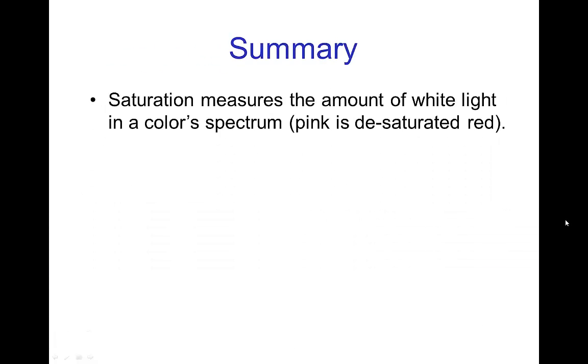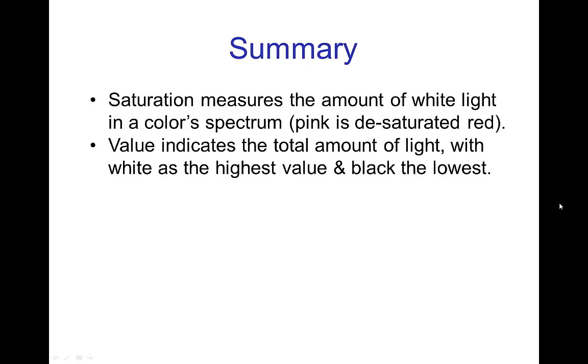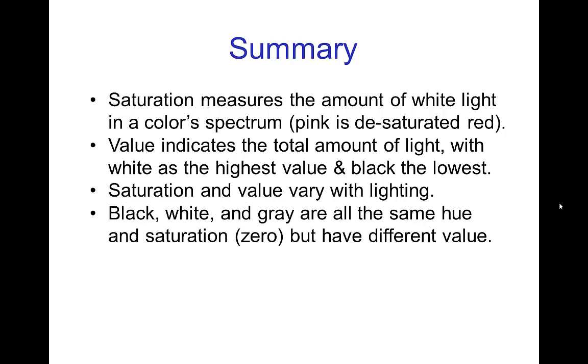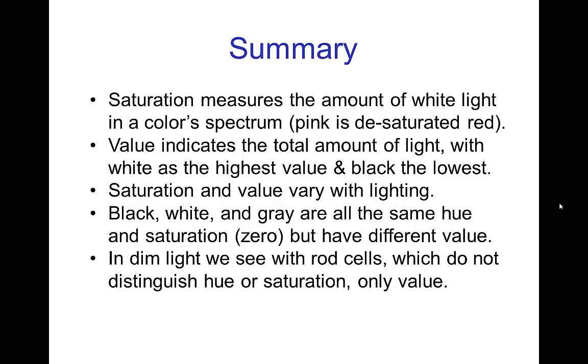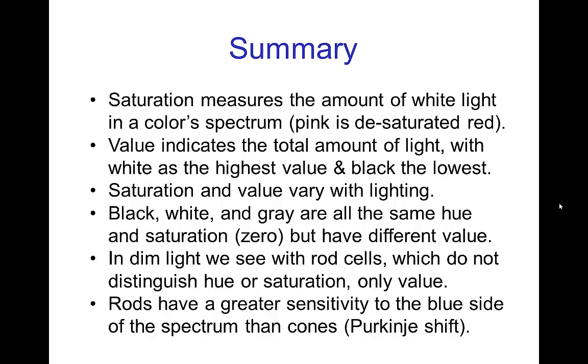In summary, the saturation measures the amount of white light in a color spectrum. Pink would be a desaturated version of red. Value indicates the total amount of light with white being the highest value and black the lowest. Saturation and value vary with lighting conditions. Black, white, and gray are all the same hue and zero saturation, but just different levels of value. In dim light we see with the rod cells which do not distinguish hue or saturation. They only see value. And then finally the rods have a greater sensitivity to the blue side of the spectrum than the cones, so it's not the same as seeing in gray scale.